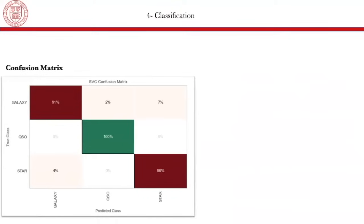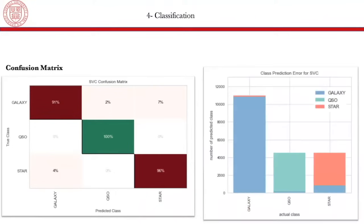And here is our confusion matrix. We have the true class in the y-axis and the predicted class in the x-axis. And we can see that galaxies have been predicted with an accuracy of 91%. Quasars have been predicted with an accuracy of 100%. And stars have been predicted with an accuracy of 96%. And this is just a model representation of the results. This is the number of predicted class versus the actual class. And the reason why we have very high values for quasars is that quasars are very distinguishable from stars and galaxies based on the redshift physically.